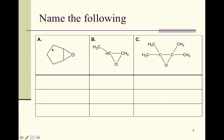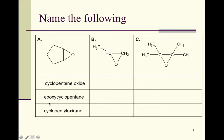For letter A, we have a cyclopentane ring. The starting material would have been cyclopentene with a carbon-carbon double bond. So the non-systematic name is cyclopentene oxide, and the systematic name is epoxycyclopentane. No number is needed in front because there's no ambiguity about the address of the epoxide. The historical name is cyclopentaloxyrane.